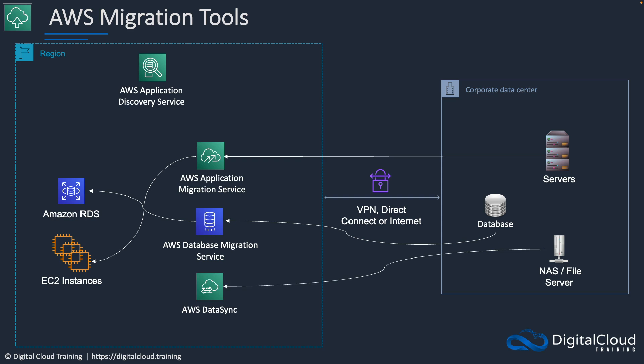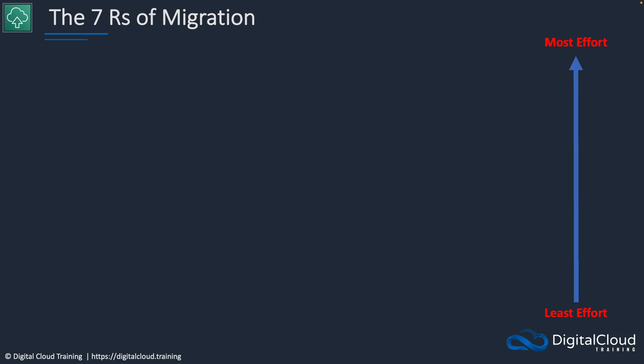Then we have DataSync. DataSync is the service for migrating our data. Our data might be stored on a NAS system — it could be an SMB store like a Microsoft file server — and we want to migrate that into AWS. The destinations include the EFS file system, Amazon S3, and also Amazon FSx.